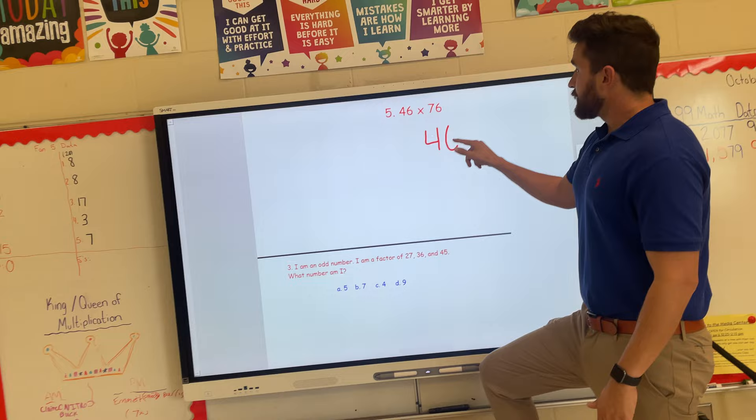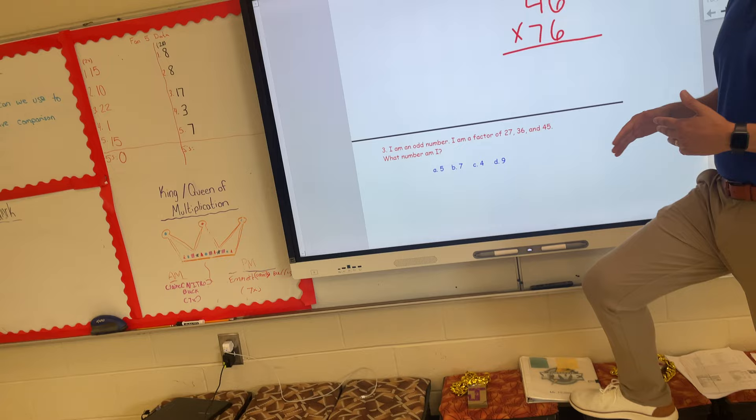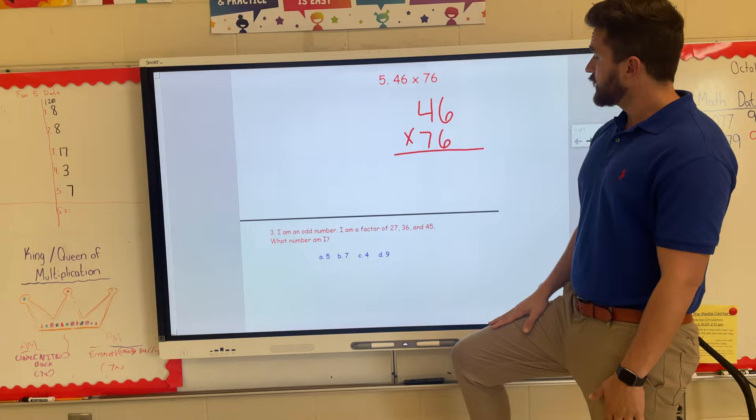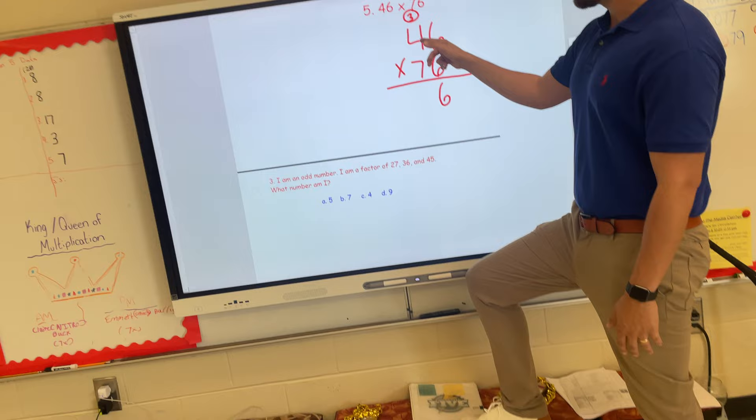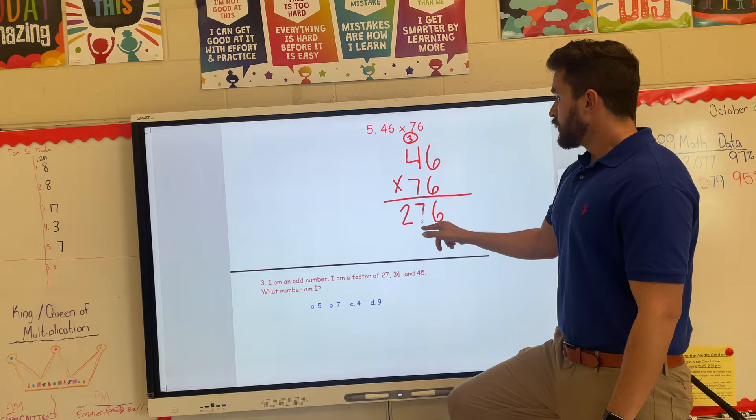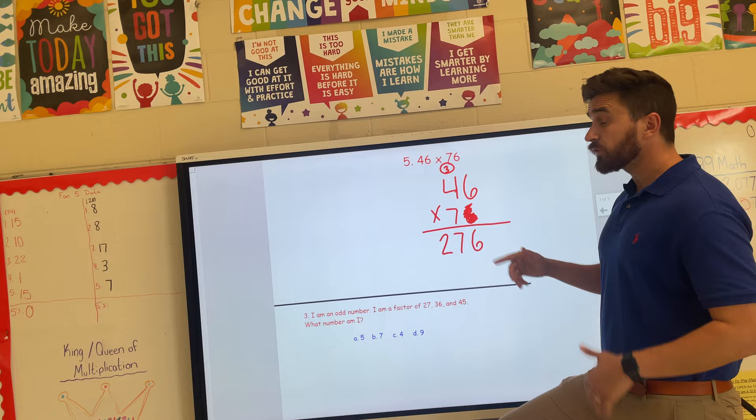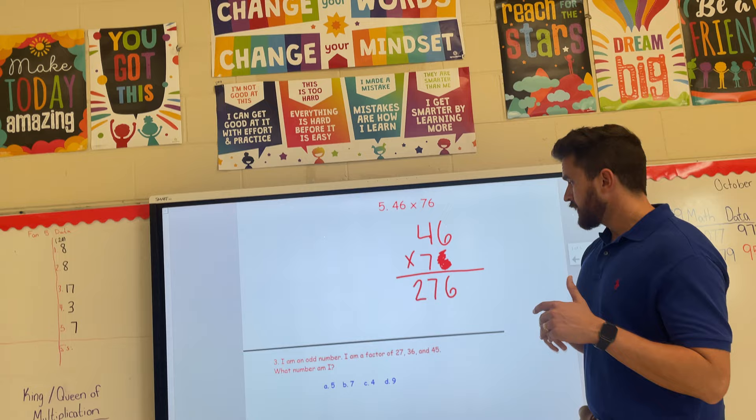But what I'm going to show them this week is we're just going to stack them—do it the traditional way. I told them we almost want to act like this seven doesn't even exist, so it's almost like we're doing 46 times 6. Starting in the ones place, we'll go six times six and we'll get 36. Six stays, three goes. Then I'll go across here to the tens. We'll do six times four, give us 24, plus that three gives us 27. Once I'm done multiplying by the ones place, I'm going to scratch it out. I'm also going to get rid of anything that I carried over so now I can multiply by the tens place.